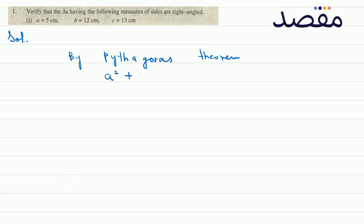By Pythagoras theorem, we have a square plus b square is equal to c square. Now we have a square, a given as 5 square, plus b given as 12.